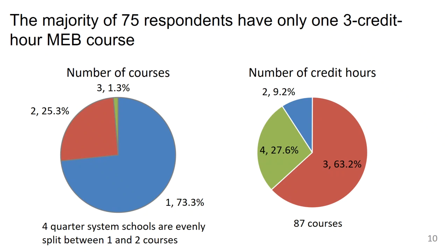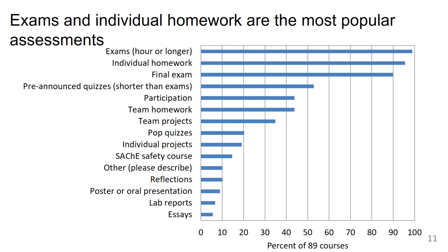Looking at the difference between having a first class and a second class, the second classes were not more frequently two credit hours or four credit hours as far as I could tell. For assessments, exams and individual homework are used at many universities. Pre-announced quizzes and team homework are also common.